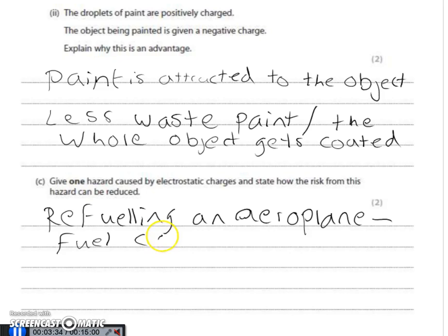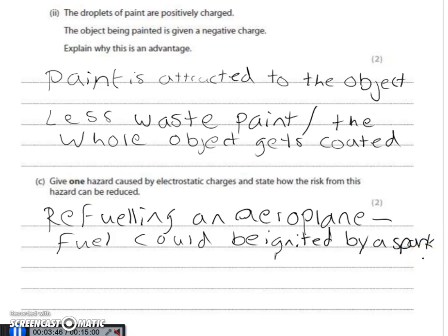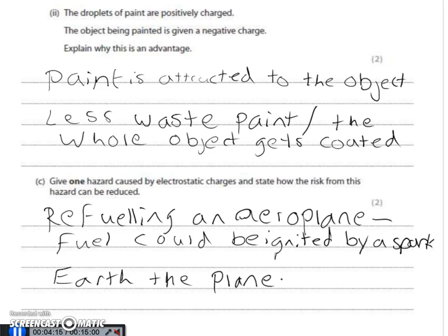How can the hazard be reduced? We need to remove that buildup of charge on the pipe or in the tank. The best way to do that is to earth the aeroplane — if the aeroplane is earthed, no charge will build up. As soon as positive charge builds up, negative electrons will come from the ground to cancel it out; if negative charge builds up, that charge will be able to escape to earth.